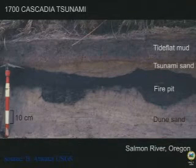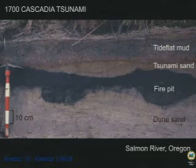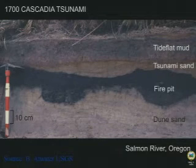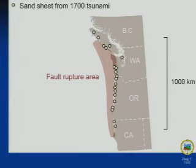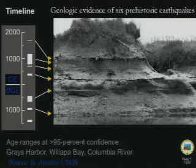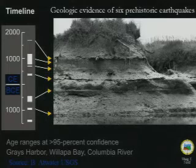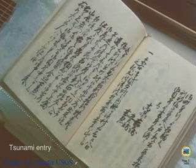This is a cross-section of what it looks like in the field. You can see a fire pit from Native American communities, the tsunami sand on top of that, and tidal muds that have developed and accumulated over the decades afterwards. This is actually from the 1700 Cascadia earthquake. Up and down the coastline where you see the dots is where we have evidence, and you can see the rupture zone of the last earthquake was projected to be quite large, about 1,000 kilometers long. And we don't just have evidence of the last subduction zone earthquake — we can look back in time in the geologic record, and this cross-section shows seven past earthquakes.